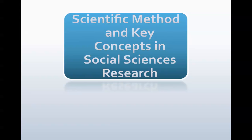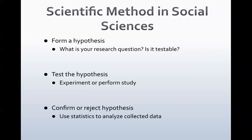The scientific method and key concepts in social sciences research revolve around the idea of forming a hypothesis. A hypothesis is really just restating the question you're trying to answer. So if the research question is, 'Do students who work have lower GPA than students who do not work?'—a hypothesis would be stated as, 'Students who work have a lower GPA.' It's a statement, not a question. The next thing you should always ask yourself is: is it testable? For this example, it absolutely is testable.